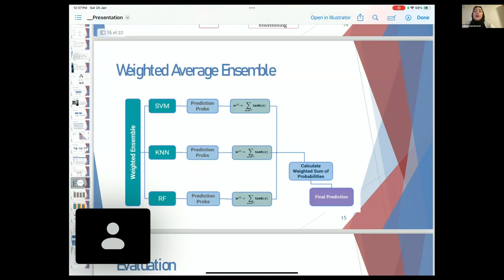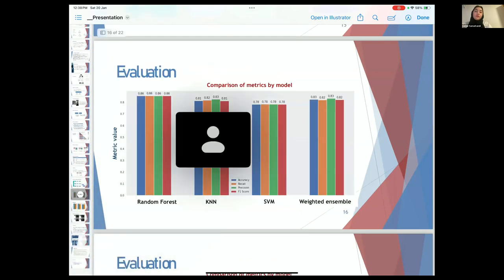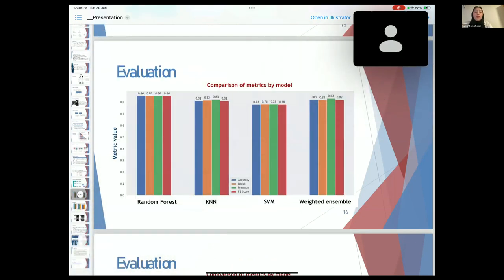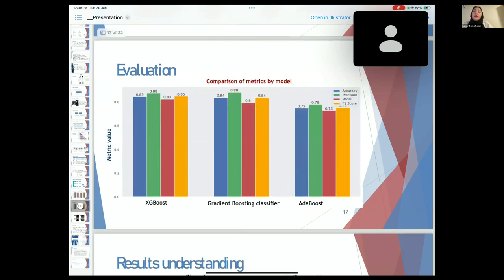This is how it calculates and processes it to get the final prediction. As you can see, this is the comparison of metric models that all average around the same, with the highest performance coming from the random forest model and the XGBoost.